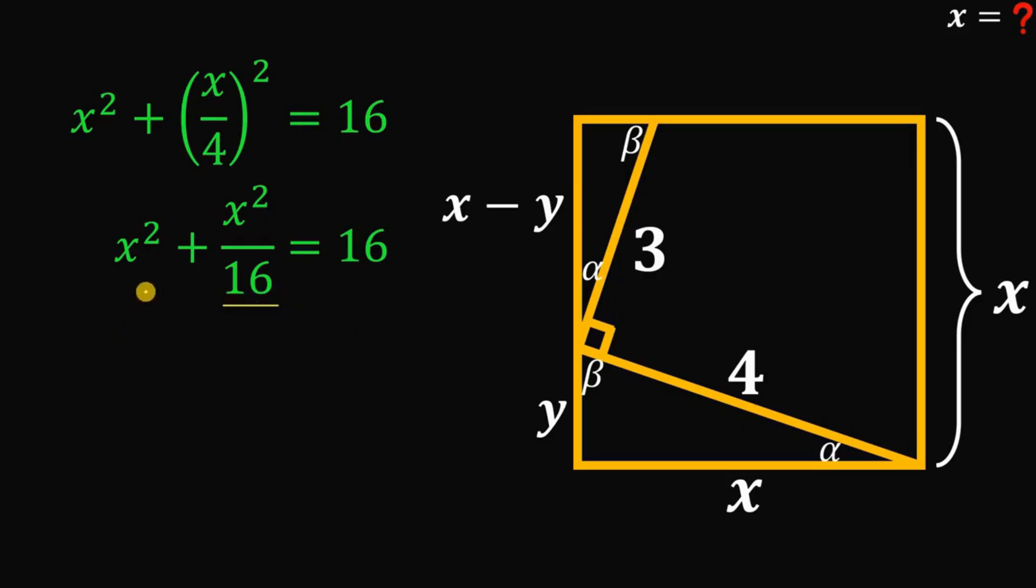To eliminate this denominator 16, let's multiply all of these terms by 16. Combine like terms. 16x squared plus x squared is 17x squared equals 16 squared.